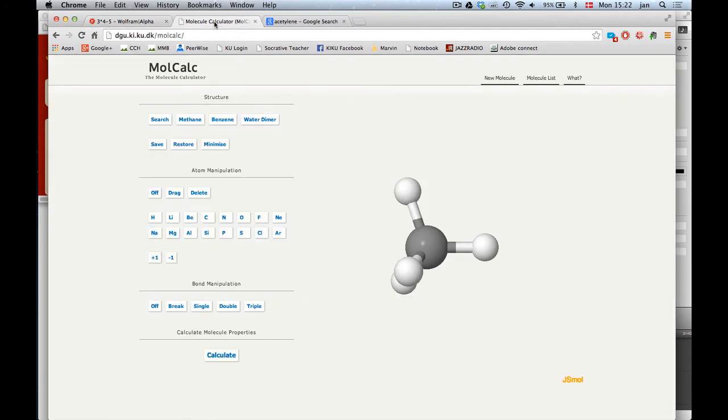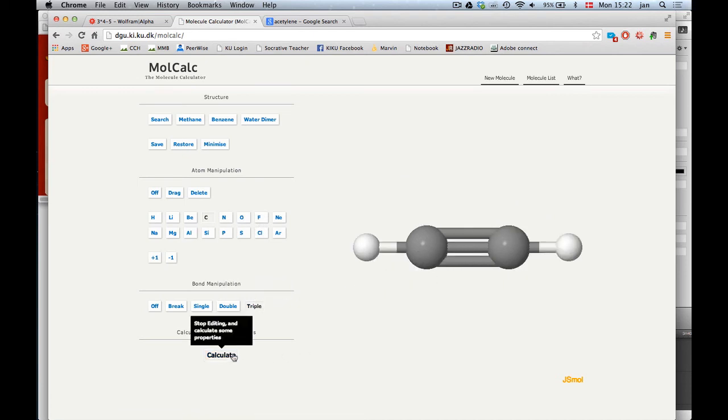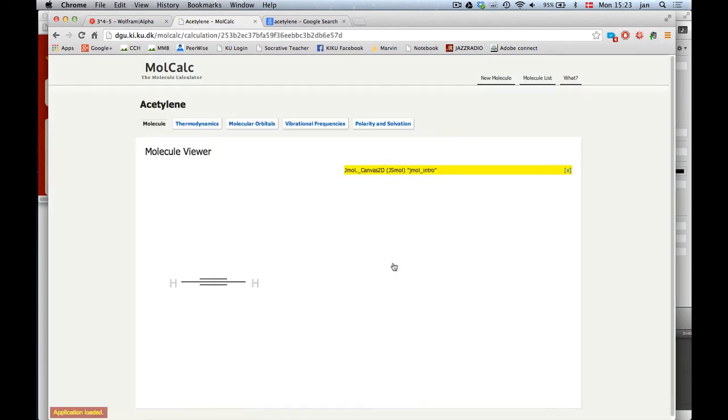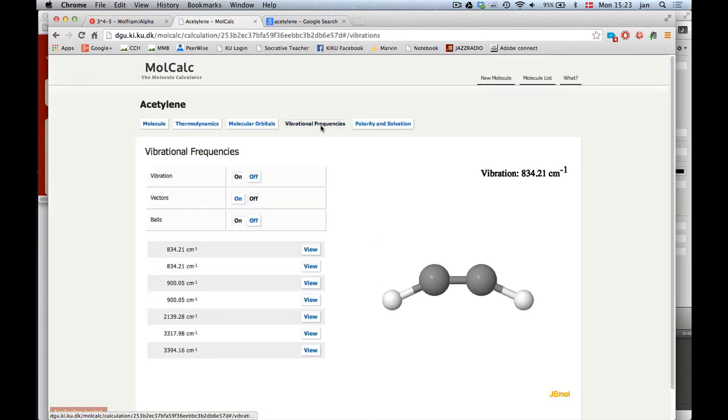Let's check these numbers with molecular calculator. So I built acetylene. I have to put a triple bond here. Now I'm ready to calculate. Let's look at the vibrational frequencies: 1, 2, 3, 4, 5, 6, 7 vibrational frequencies.